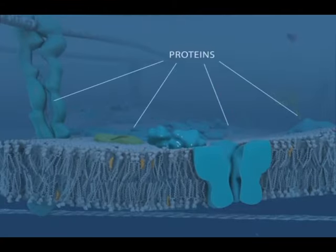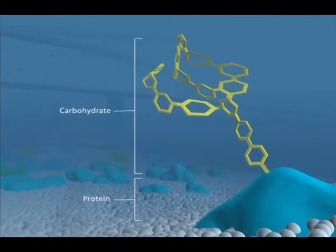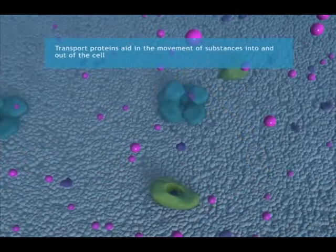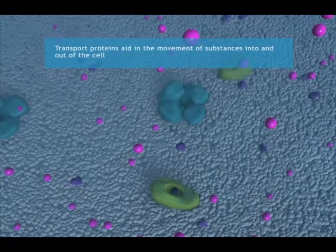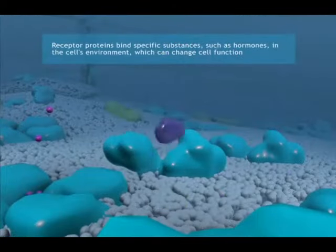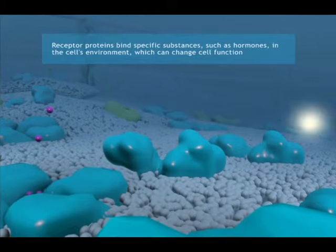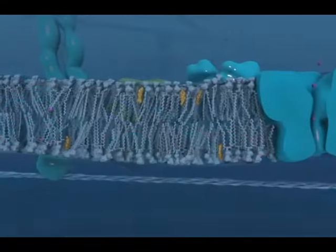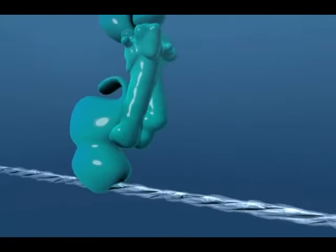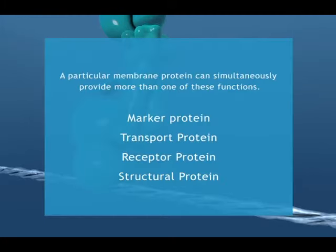Cell membranes contain proteins which provide several functions to the cell. Some proteins and their attached carbohydrates help immune cells recognize them as their own type. Transport proteins aid in the movement of substances into and out of the cell. Receptor proteins bind specific substances such as hormones in the cell's environment which can change cell function. Structural proteins are attached to microfilaments in the cytoskeleton which ensures stability of the cell. A particular membrane protein can simultaneously provide more than one of these functions.